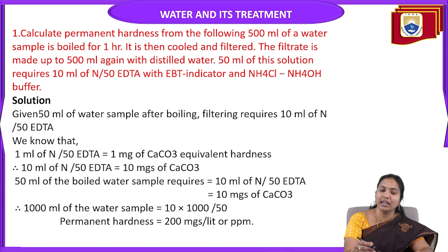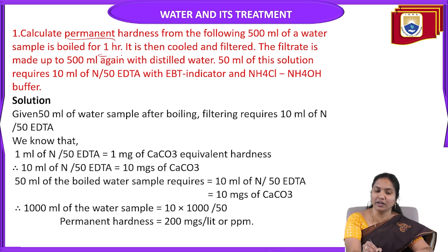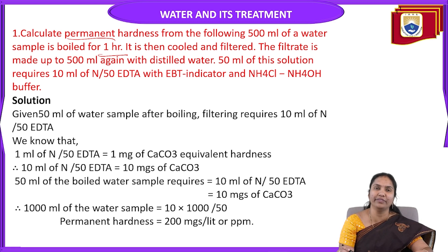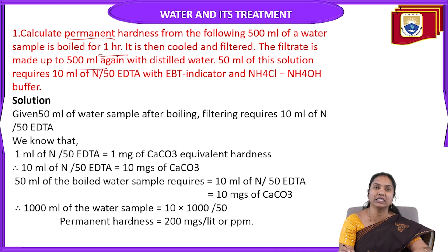The first problem: calculate the permanent hardness from the following data. 500 ml of a water sample is boiled for 1 hour. It is then cooled and filtered. The filtrate is made up to 500 ml again with distilled water. So what does it mean — calculate the permanent hardness.